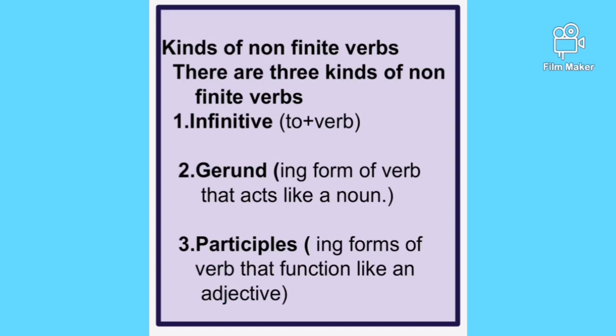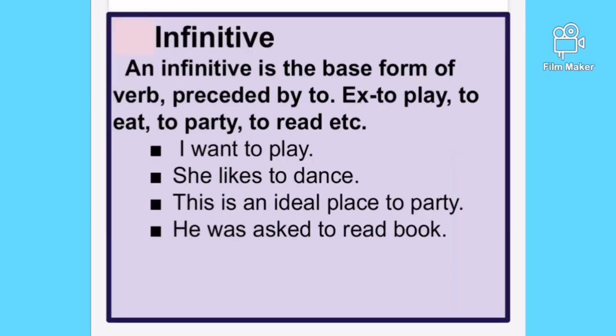There are three kinds of non-finite verbs. First, infinitives — that is 'to' plus verb. Second, gerund — this is the 'ing' form of a verb that acts like a noun in the sentence. Third, participle — this is also the 'ing' form of a verb but it functions like an adjective. Let's start with the first one: infinitive.